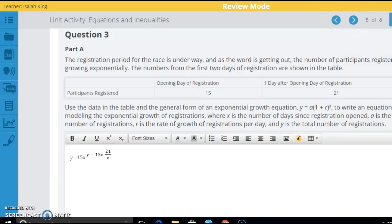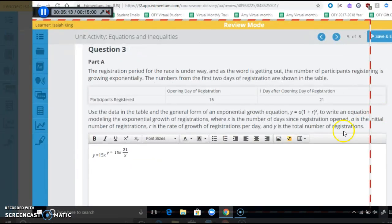Okay, now this one here. And I think I emailed you about this one. It says, so basically all we're doing here is inputting a couple pieces of data. If we look, it says opening day of registration, there's 15 participants. After one day, there's 21. And we want to put it into our exponential growth equation here. And it tells us what those variables are. So x is the number of days since registration. A is the initial number of registrants. R is the rate of growth. And y is the total.